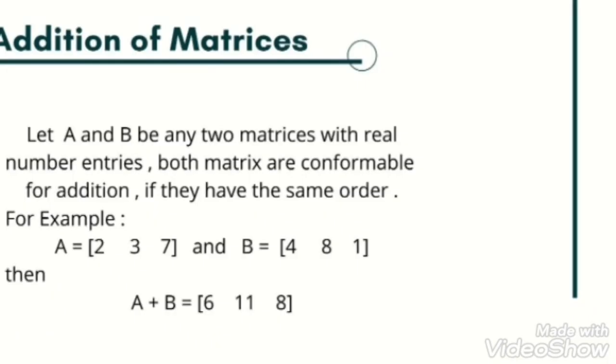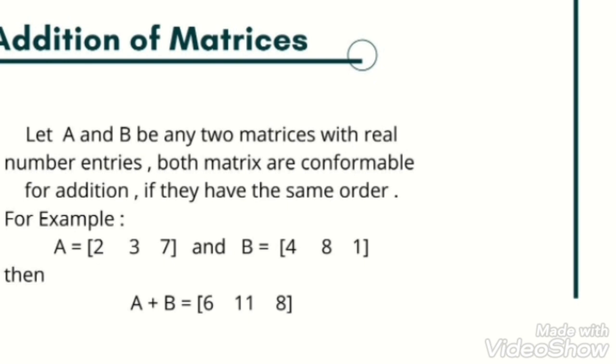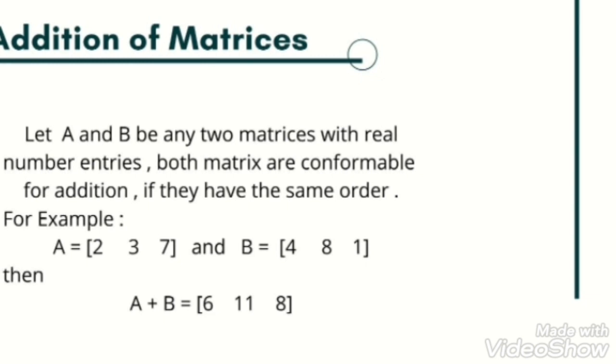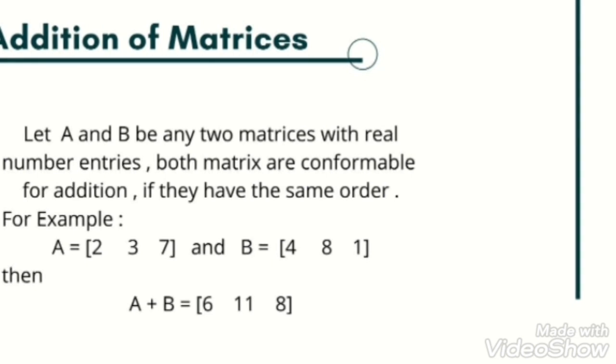Addition of matrices: simple addition, two plus two equals four, three plus seven equals ten. Now we discuss addition of matrices - how to add matrices. Matrices are conformable for addition when they have the same order.